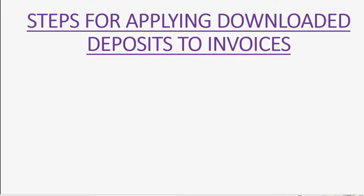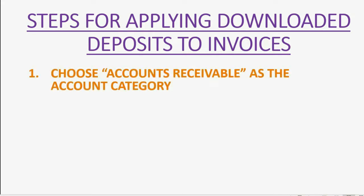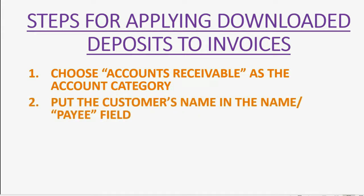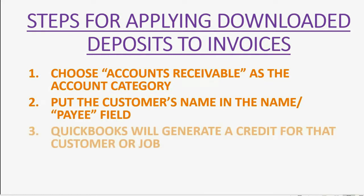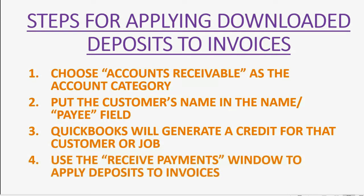What are the steps for applying downloaded deposits to open invoices? First, when you record it from the bank feed center, the account category you choose is Accounts Receivable. Then you put the customer's name in the payee field. QuickBooks will generate a credit for that customer or job. Then you leave the bank feeds window and go to the Receive Payments window to apply that recorded deposit to any open invoice.